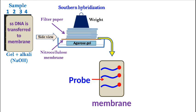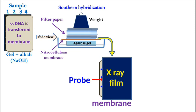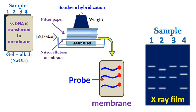Once the probe hybridizes to the membrane, an X-ray film is placed on the membrane to detect the probe. Any variations in the length of the gene can be detected by looking at the autoradiogram.